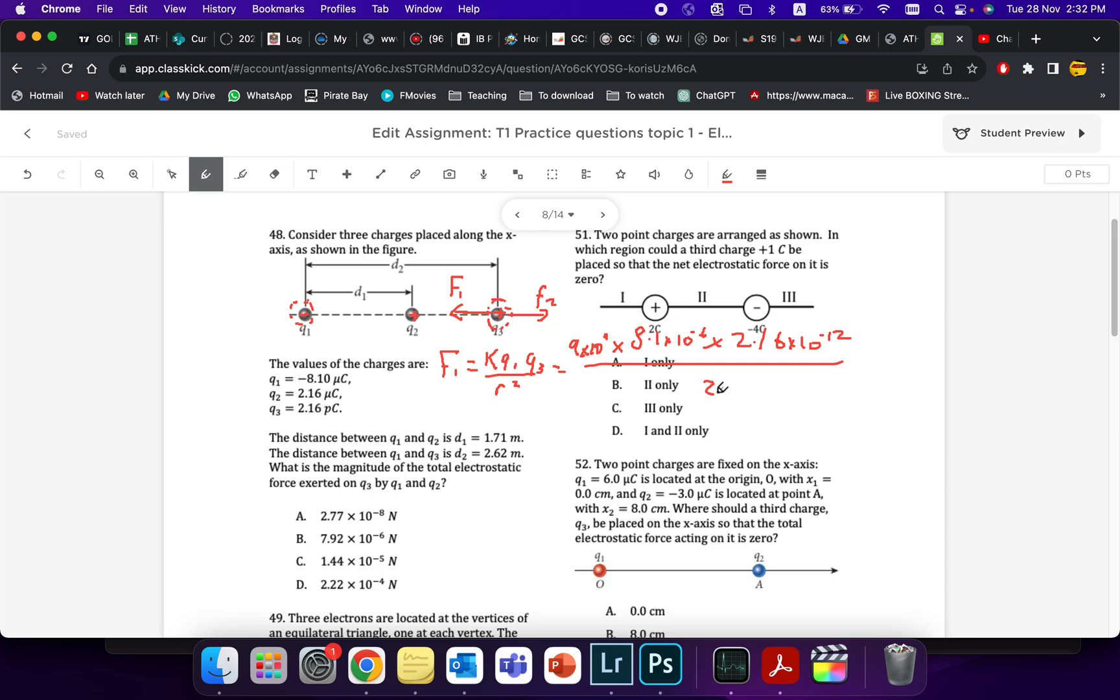There we go. Divide that by the distance of 2.16 metres. If you solve that, you should get the answer of, let's see. I can't find it. Let's do it now. 2.29 times 10 to the power of minus 8 newtons. So I have one of the forces.